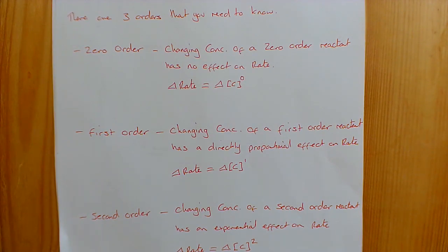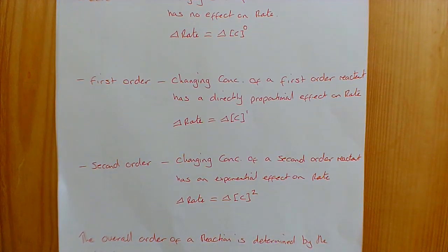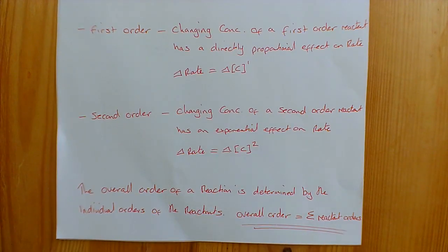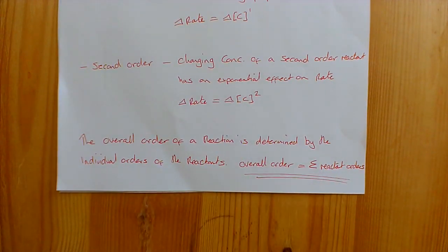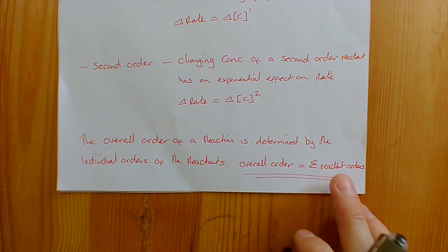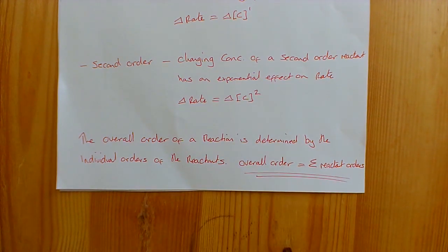To recap: a zero order reactant — changing its concentration has no effect on the rate. A first order reactant — whatever you do to the concentration it will do the same thing to the rate, so doubling it doubles the rate. A second order reactant — the rate changes by whatever you changed the concentration squared, so doubling the concentration increases the rate by a factor of 4, quadrupling it increases the rate by a factor of 16. Overall order is just the sum of all individual reactant orders.